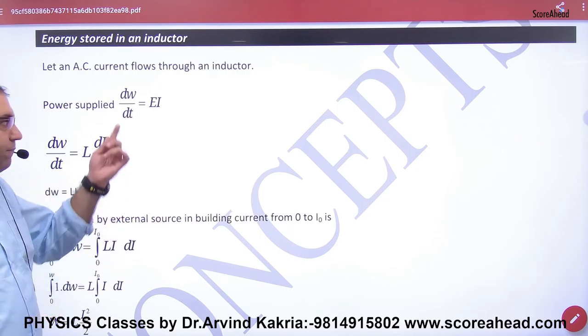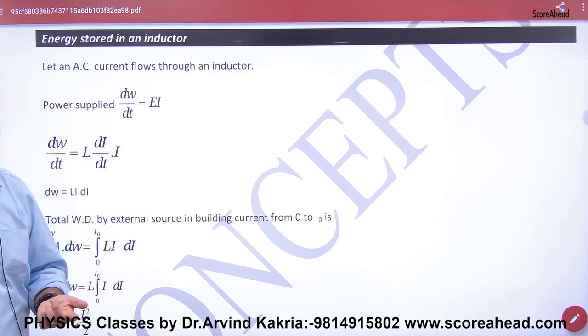What is E for induced EMF? Induced EMF is L dI by dt in magnitude in the inductor. dt and dt cancels, so it is dW.